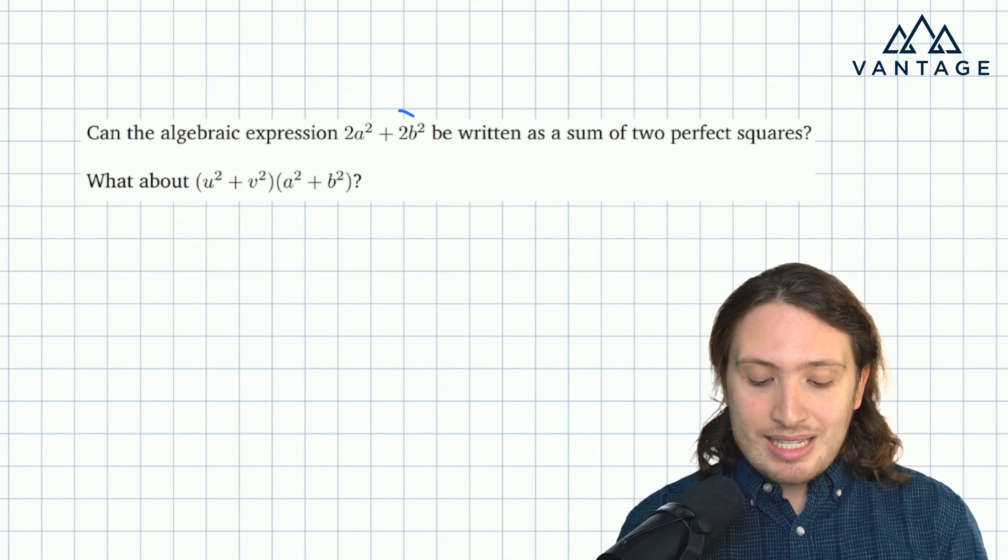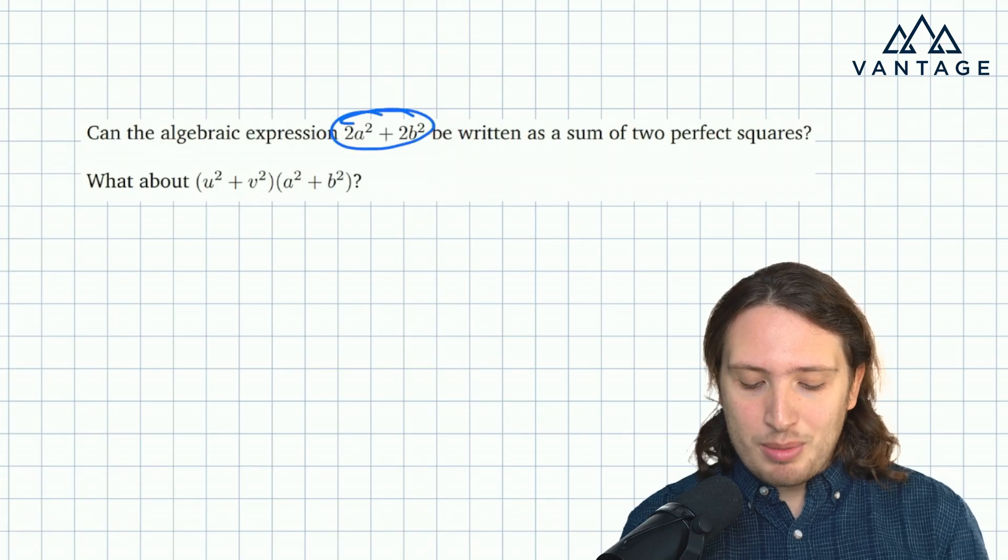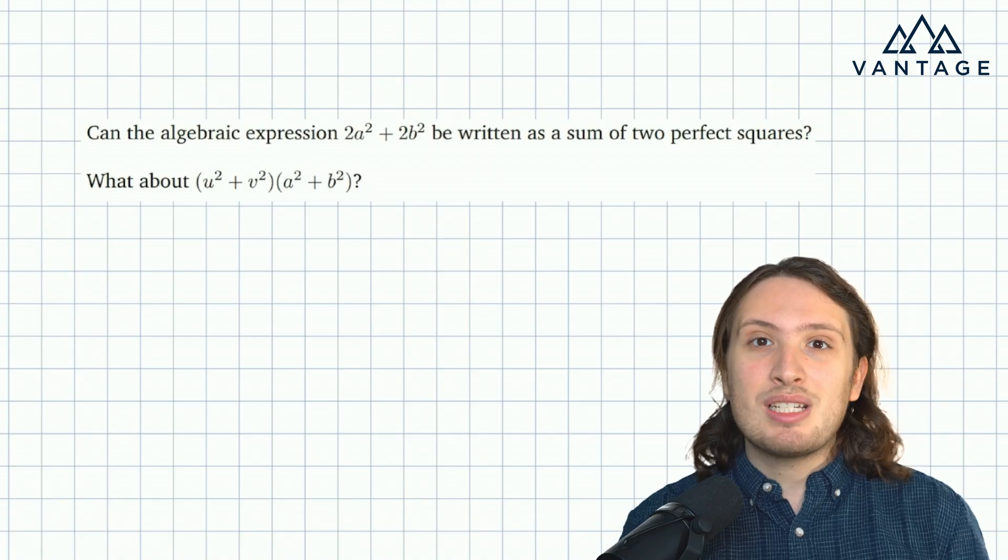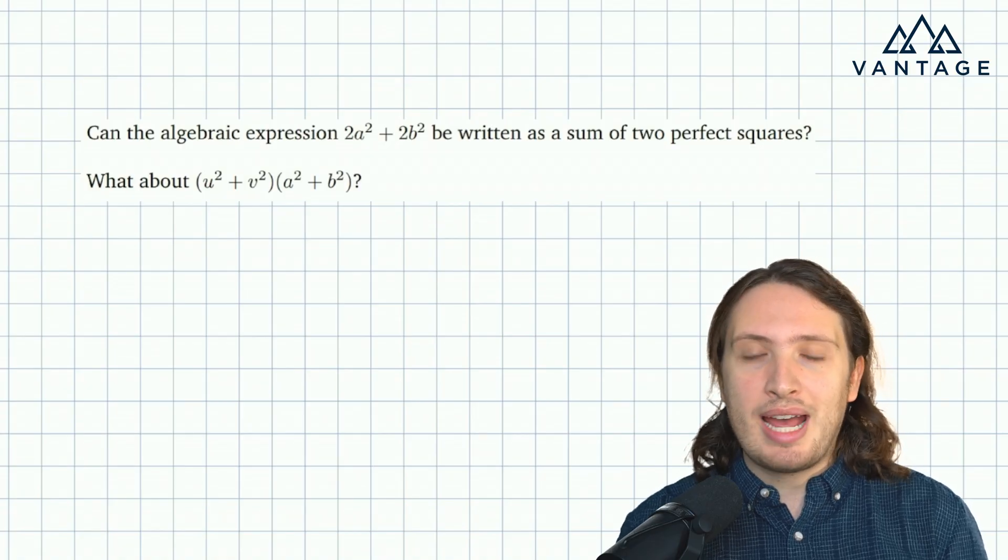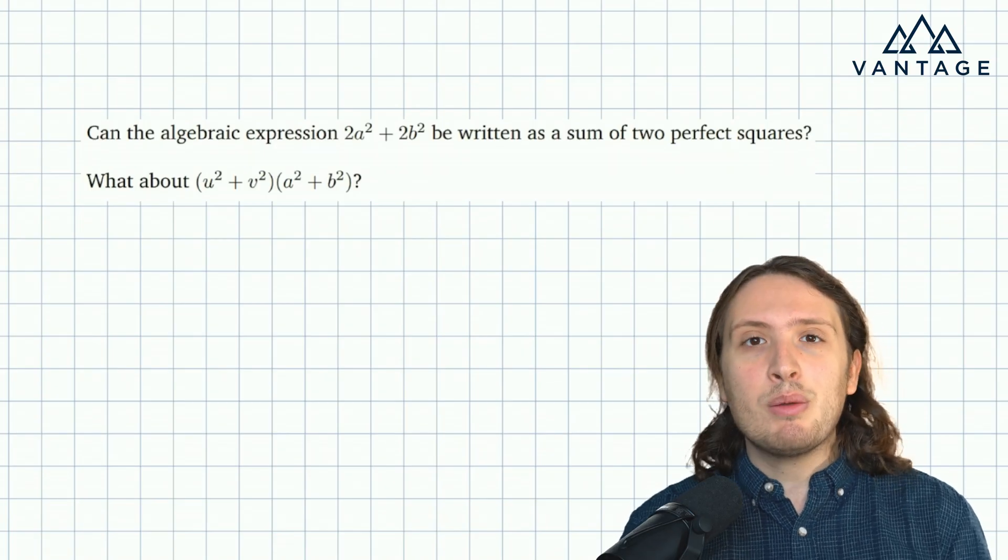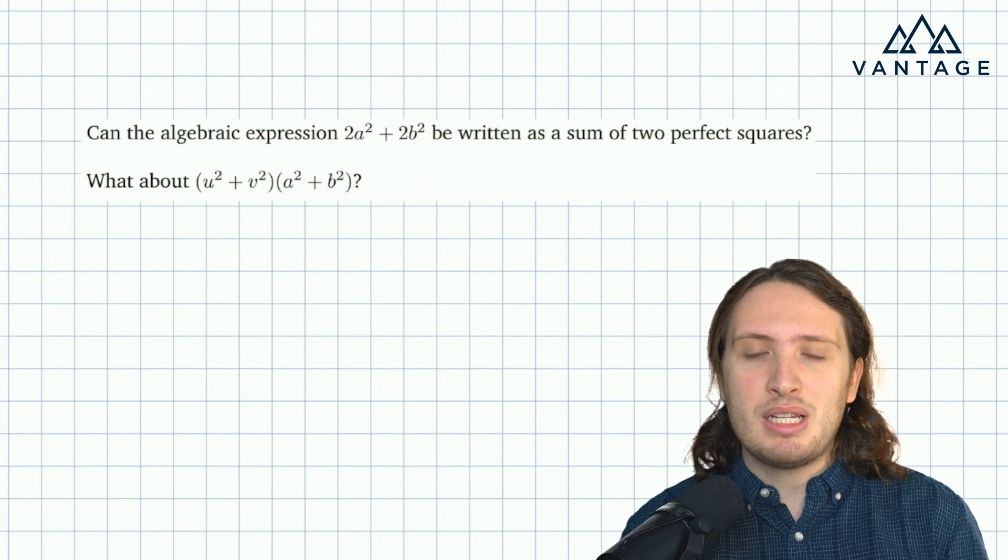And maybe we could reason something like, you know, the divisibility properties of this expression by three, the remainders, the possible remainders are incompatible with the remainders we could get for a sum of two squares. So some sort of divisibility argument would presumably be the way we'd show it can't be done.